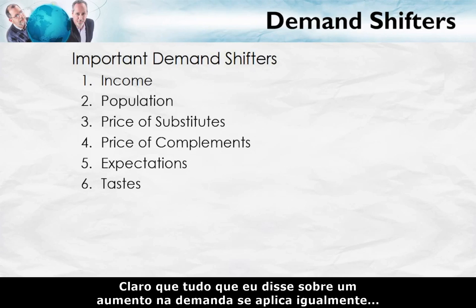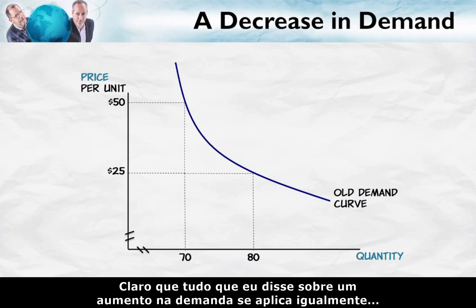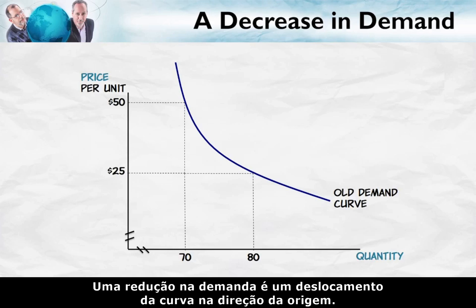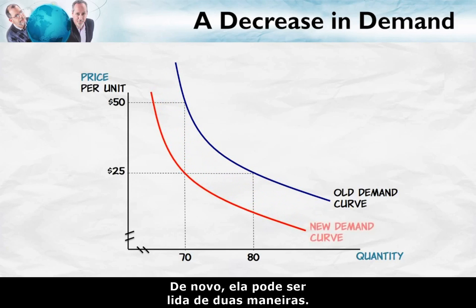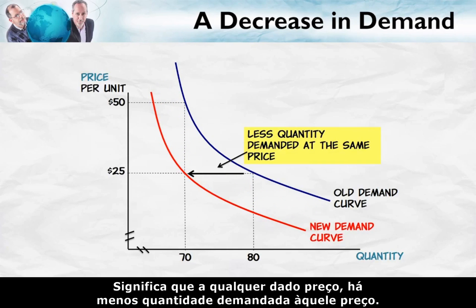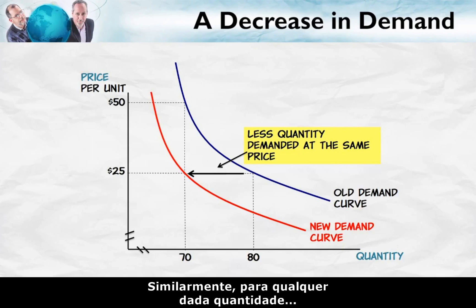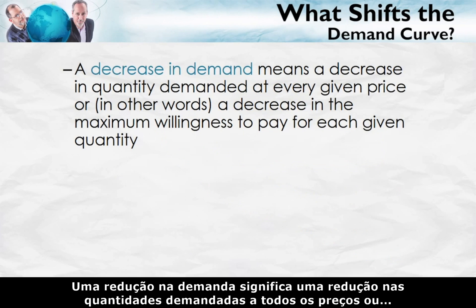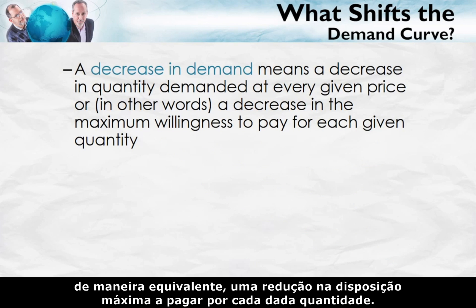Of course, everything I've said about an increase in demand applies just the same but in reverse for a decrease in demand. A decrease in demand is a shift inwards of the curve toward the origin, and it can be read in two ways. It means that at any given price, there is less quantity demanded. Similarly, for any given quantity, there is a lower willingness to pay. A decrease in demand means a decrease in the quantity demanded at every given price, or equivalently, a decrease in the maximum willingness to pay for each given quantity.